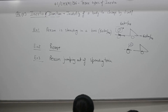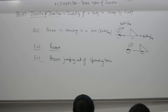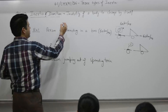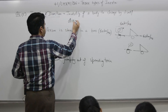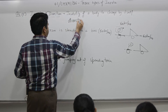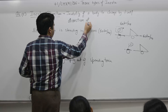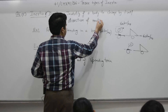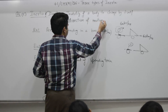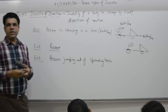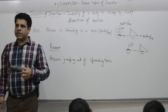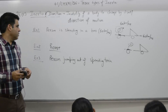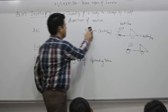Part C is inertia of direction. It is the inability of a body to change by itself its direction of motion. That means if an object is moving in a particular direction, it will continue to move in that direction only.